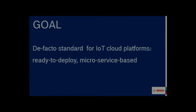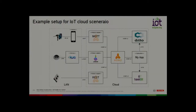Some of these components are in the setup we've just seen in the demo. The goal is to have a de facto standard for IoT cloud platforms — ready to deploy, microservice-based. A typical setup has different devices connected through a gateway like a smartphone, a wired connection, or another gateway — Kura. Because you're using different protocols — potentially hundreds — you want protocol adapters handling all the traffic. Then there's Hawkbit for software updates, and Ditto for digital twins, providing an easy way to interact with devices as if they were just objects.